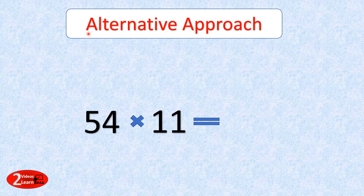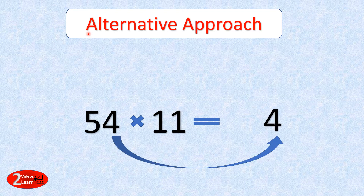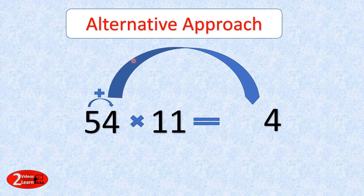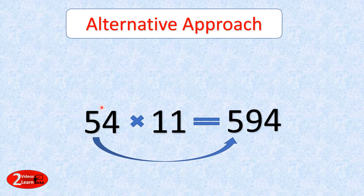The first task is to find the ones place digit — I write 4 as is. Now we need to find the tens place digit, so we sum 5 plus 4, which is 9, and write it as the tens place digit. Now for the hundreds place digit: since we had no carry forward from the sum of 5 plus 4, we write 5 as is. So the answer is 594. I hope this approach was comparatively easier when compared to the normal method.